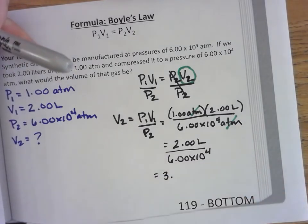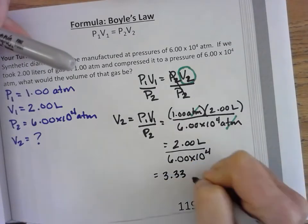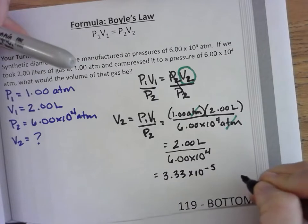If I look, all of these have 3 significant digits. So 3.33 times 10 to the minus 5 liters.